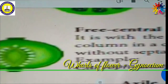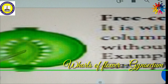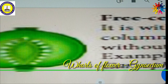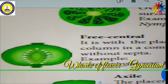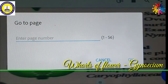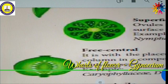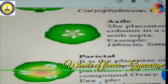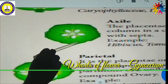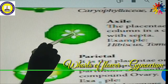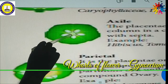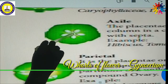Free central placentation: in the middle of the ovary there is an axis, but this axis is not attached at the top — it is freely present. If the ovules are attached to this free central axis, it is called free central placentation. The placenta is attached at the column in the center. In axial placentation, the ovary has an axis and septum, but the ovules are attached at the middle axis — not at the septum.